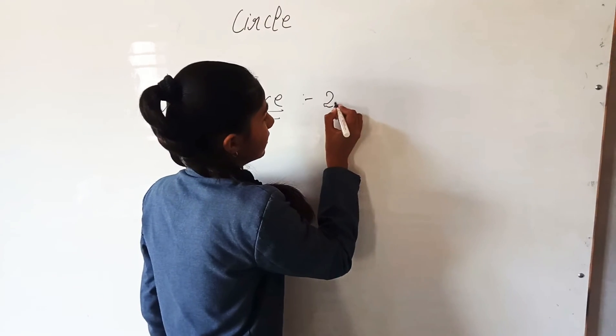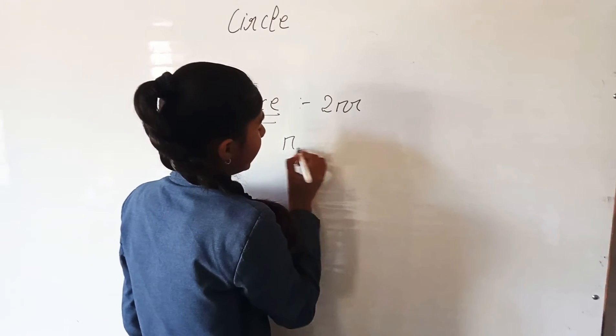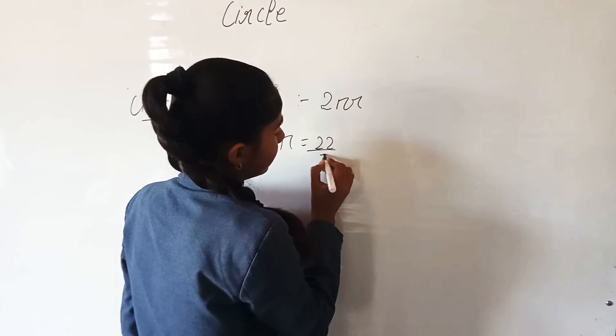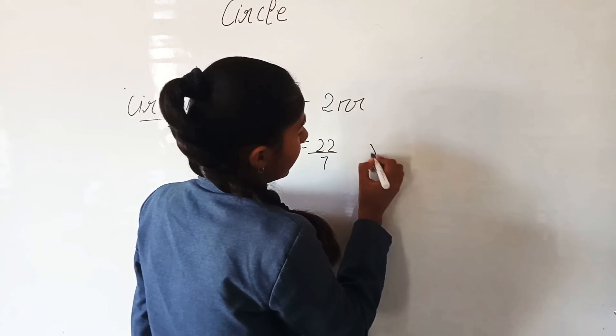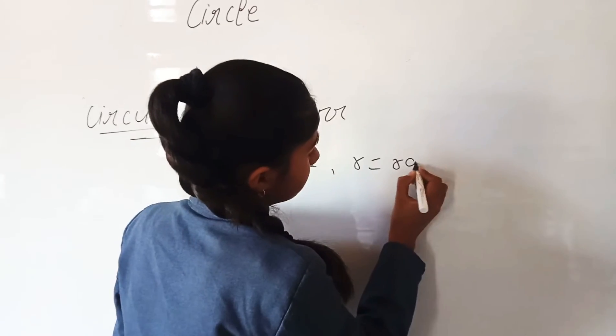The circumference of a circle is 2πr, where π is equal to 22/7 and r is the radius.